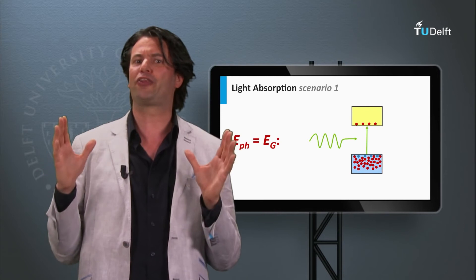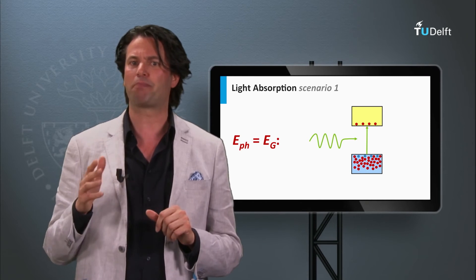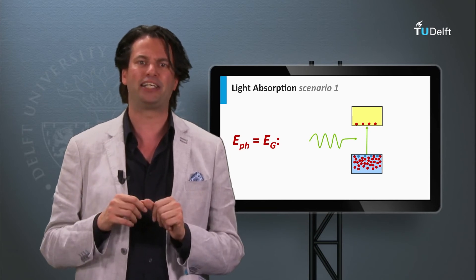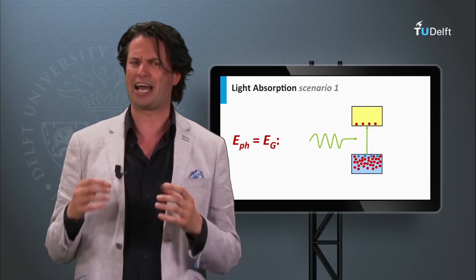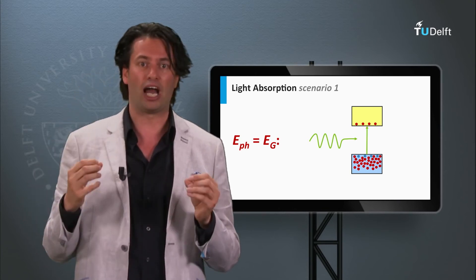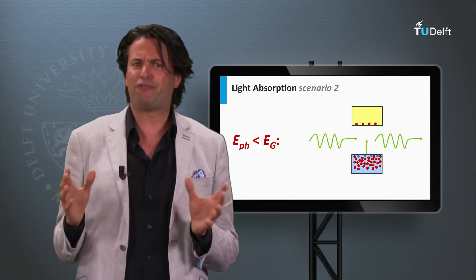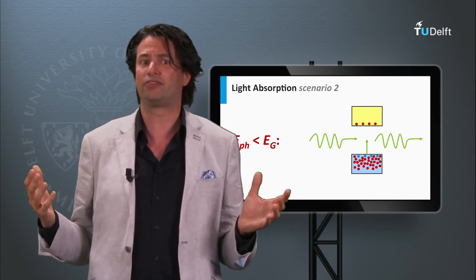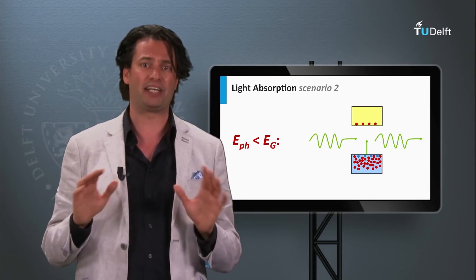Now we consider a third approach to excite charge carriers, which is by light absorption. Let's consider the electronic band diagram again and a photon with an energy equal to the band gap, indicated by the green arrow. This photon can be absorbed in a semiconductor material and used to excite an electron from the valence band to the conduction band — so light can make a semiconductor material more conductive. However, if we have a photon with an energy smaller than the band gap, it lacks the energy to excite an electron from the valence band to the conduction band and cannot be absorbed by the semiconductor material.